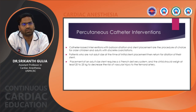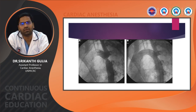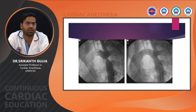Patients who are not adult size at the time of initial stent placement then return for dilatation of their stent. Placement of an adult-size stent requires a 6 French delivery system and the patient should weigh at least 20 to 25 kilograms to decrease the risk of vascular injury to the femoral artery.